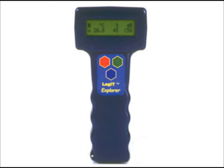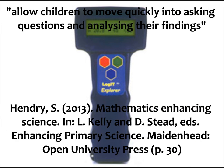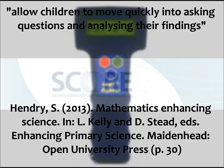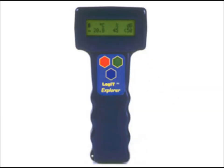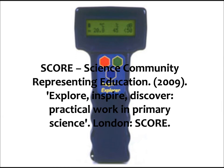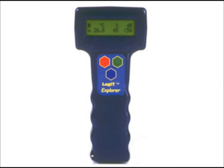There are ample opportunities for the use of data loggers, for example, which allow children to move quickly into asking questions and analysing their findings. The Science Community Representing Education, SCORE, proposed using a data logger in an experiment to find which material would make the best curtains, blocking sunlight from a room. The use of technology also allows for differentiation: those less able can simply record whether they see a shadow or not when the light from a torch hits the inside of a shoebox, while those that are more able can measure the light levels using the data logger.